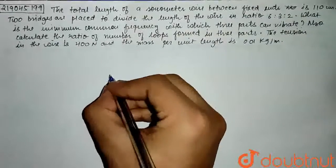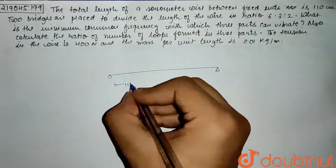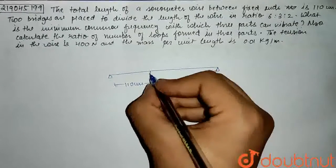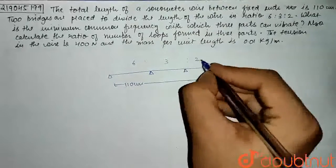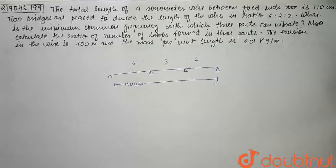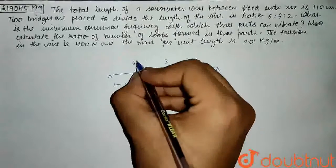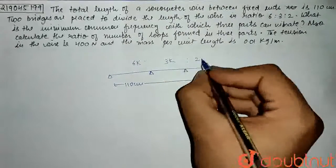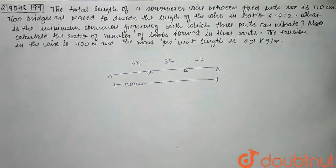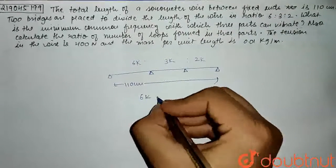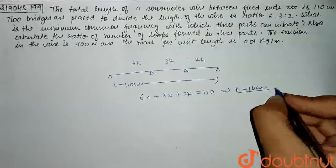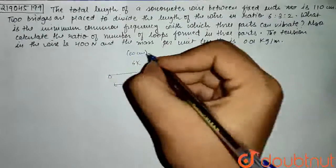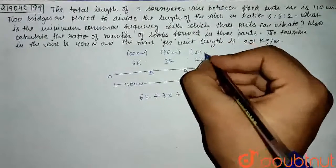So basically, we have a sonometer wire with a total length of 110 cm. Under it, we will place two wedges so that it is divided in the ratio 6:3:2. The ratio gives us segment lengths of 60 cm, 30 cm, and 20 cm.